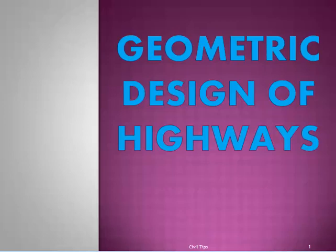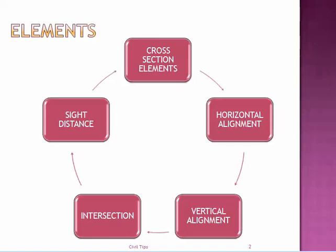With minimum cost. Let's see the various elements that we need to design. The elements can be categorized into five main headings: cross-section elements, horizontal alignment, vertical alignment, intersections, and sight distance.